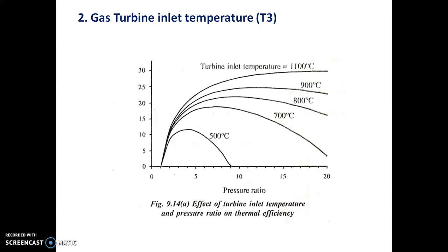Next is gas turbine inlet temperature. The increase in turbine inlet temperature at a given pressure ratio increases the work output from the turbine. At the same time, however, the heat supply in the combustion chamber is also increased. But the rate of increase in turbine work is greater than the rate of increase in heat added.